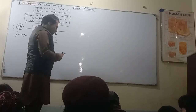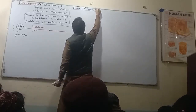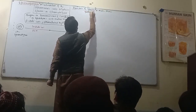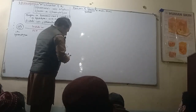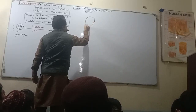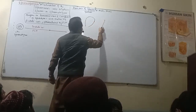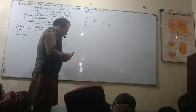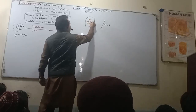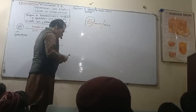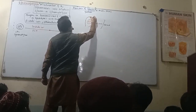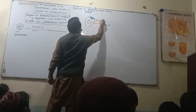Sperm is a male gamete type. It is a body that has a changing structure. An important part is the head. The head contains the nucleus with 23 chromosomes.